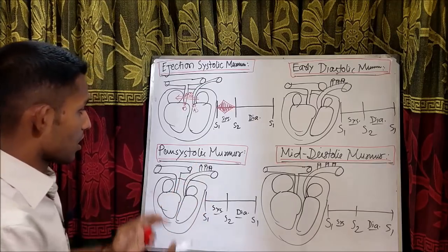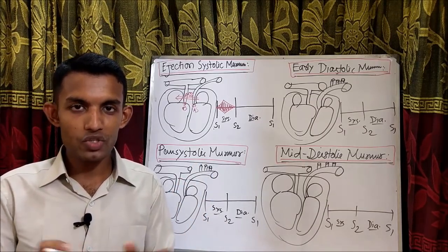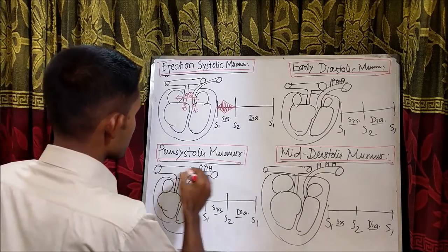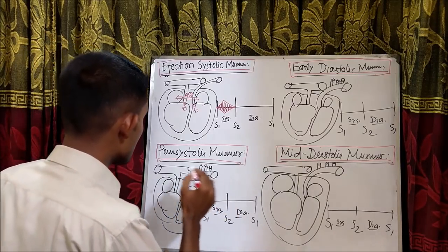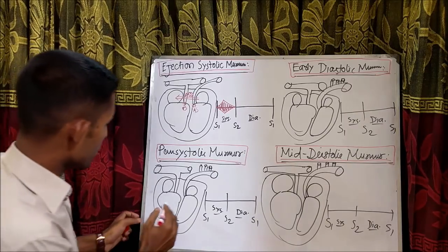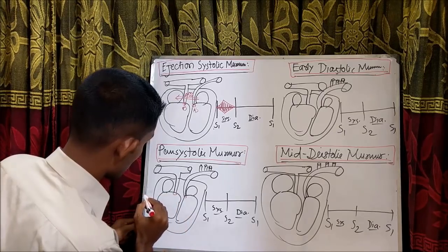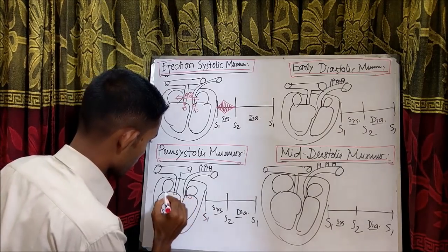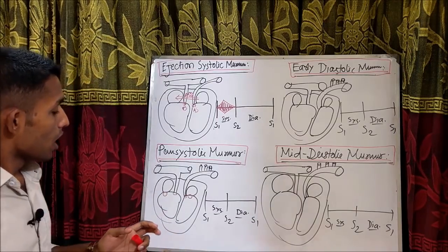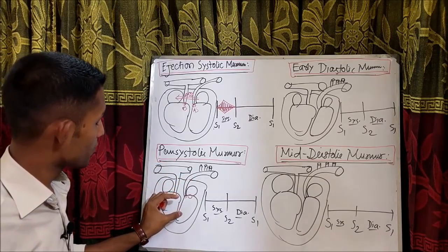Now, pansystolic murmur. The word says it all — pan means whole. So pansystolic murmur means turbulence in the whole systole due to leakage from a normally closed valve during systole. During systole, the aortic valve is opened, the pulmonary valve is opened, but the mitral valve and tricuspid valve are supposed to be closed. Turbulence in the whole systole occurs due to leakage from a normally closed valve during systole.